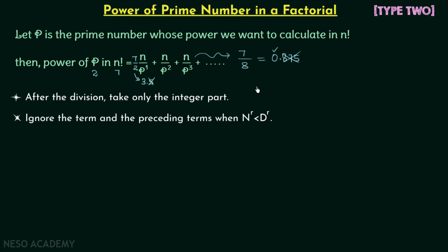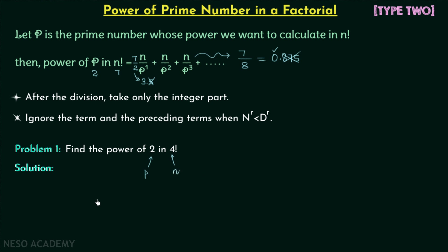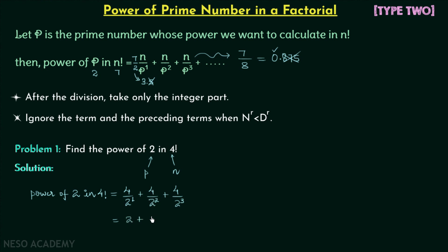Now problem number 1: find the highest power of 2 in 4 factorial. Here p equals 2 and n equals 4. The power of 2 in 4 factorial equals 4÷2¹ plus 4÷2². Since 2² equals 4, numerator and denominator are the same, so we include this term. The next term 4÷2³ has 2³ equal to 8, which is larger than 4, so we stop. Calculating: 4÷2 gives 2, 4÷4 gives 1, and 4÷8 gives integer part 0. So the total is 3.